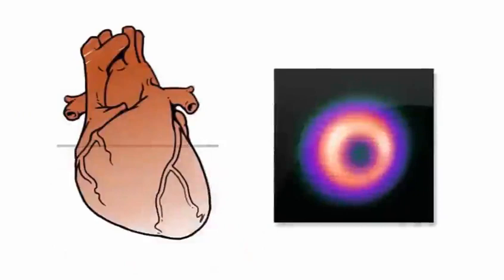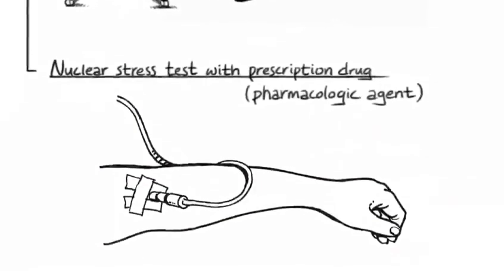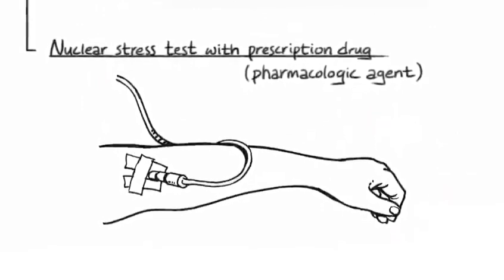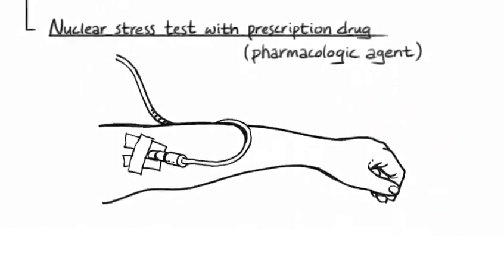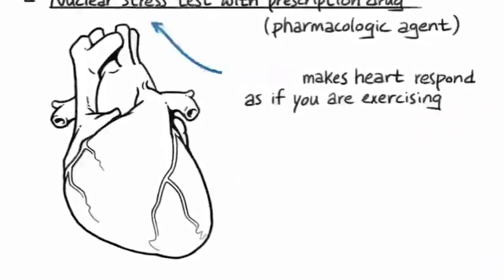If your doctor has determined that you may not be able to exercise adequately, you may have a nuclear stress test without exercise where a drug is given through IV. This will cause your heart to respond as if you are exercising.